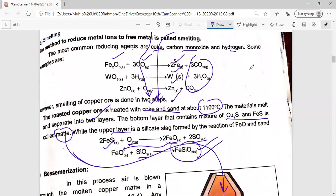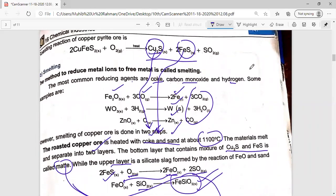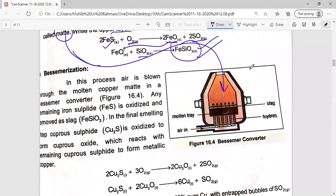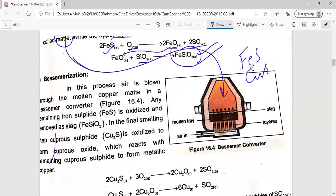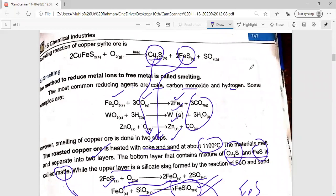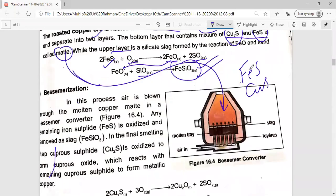So matte was copper sulfide and iron sulfide. This matte is molten copper matte. It is copper sulfide.